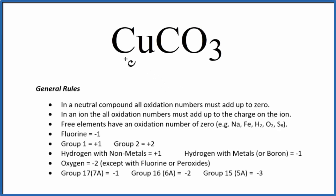To find the oxidation numbers for each element here in CuCO3, we'll use these general rules here. So we know that this is a neutral compound because there's no plus or minus charge up here. So in a neutral compound, all the oxidation numbers will add up to zero.